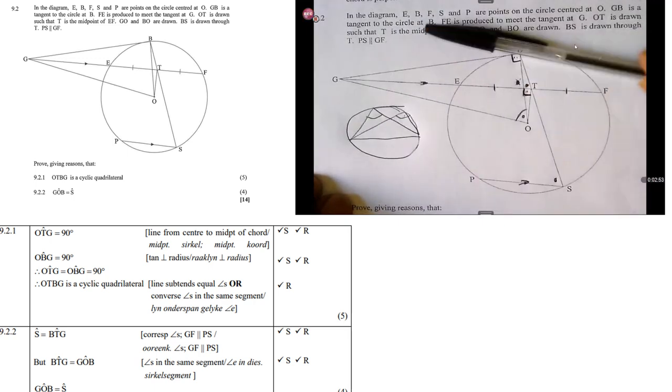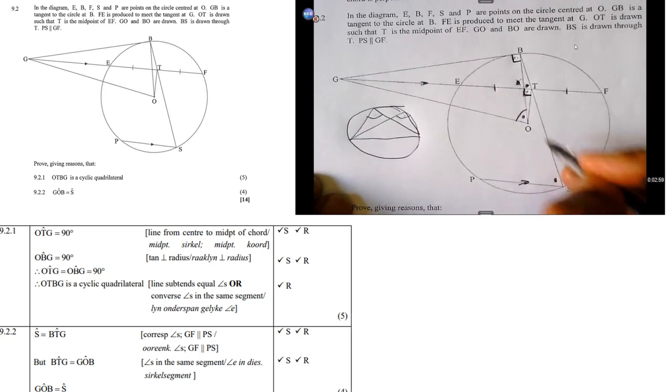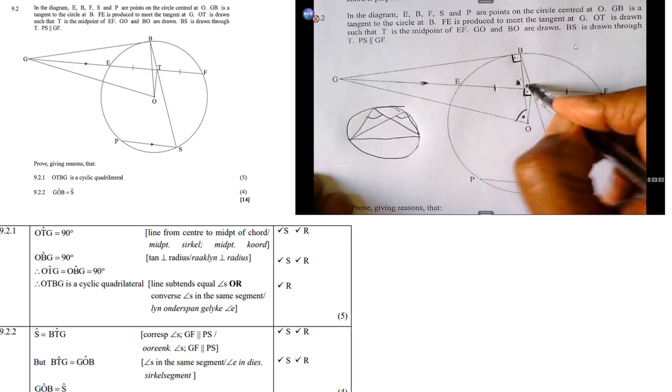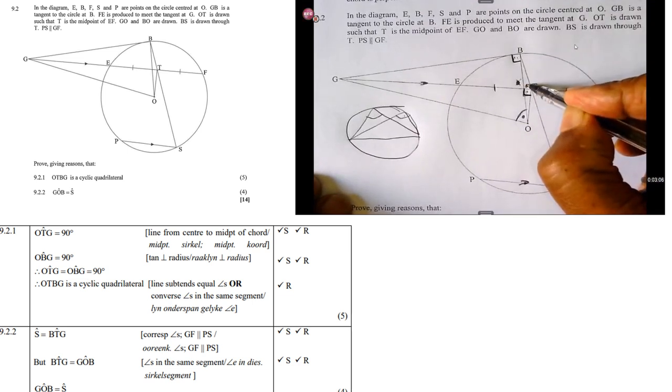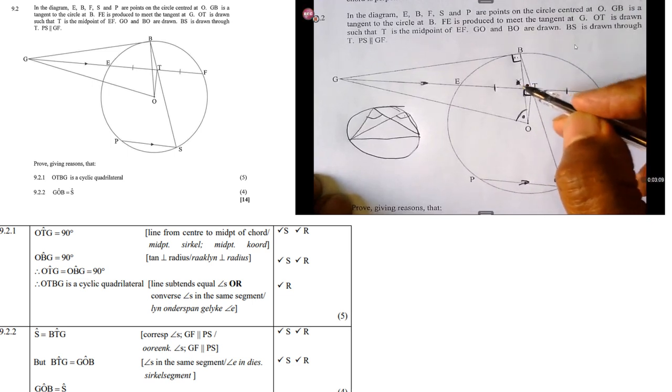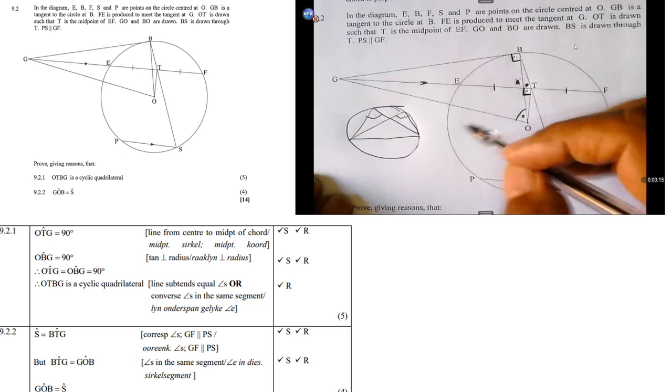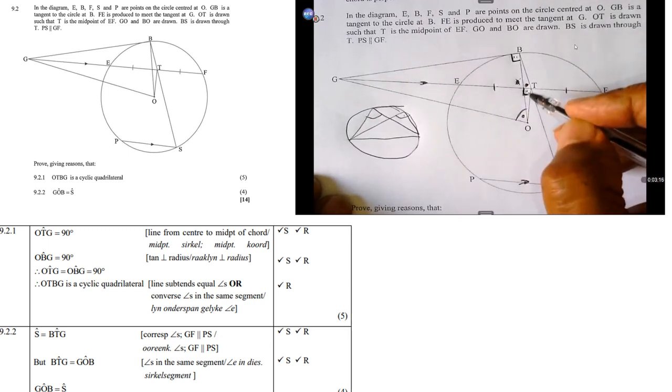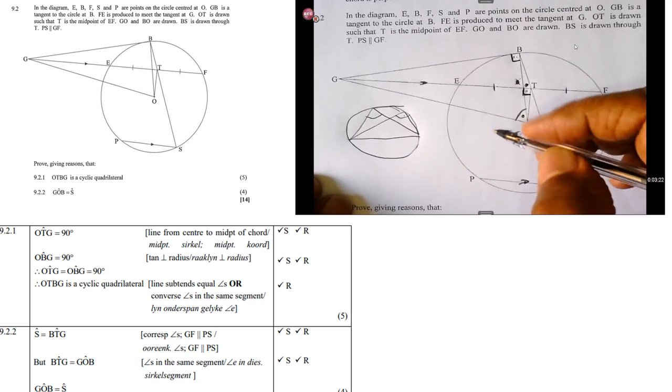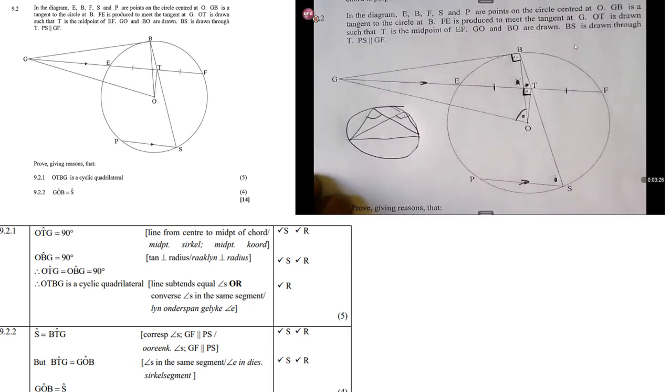Because they are corresponding angles. Remember, this line and this line are parallel. So, this angle S and this angle here are corresponding angles because the lines are parallel. But, we also know that BTG is also equal to GOB. Equal angles in the same segment. Remember, it is a cyclic quad. So, therefore, angle GOB is equal to angle S.